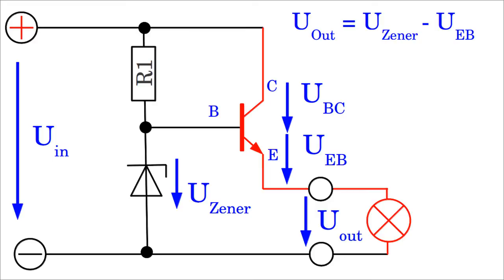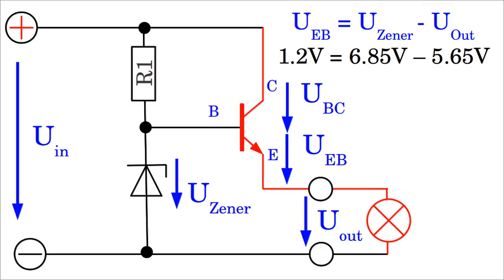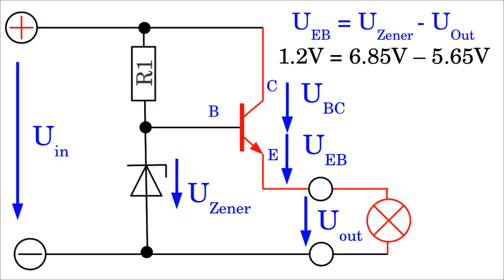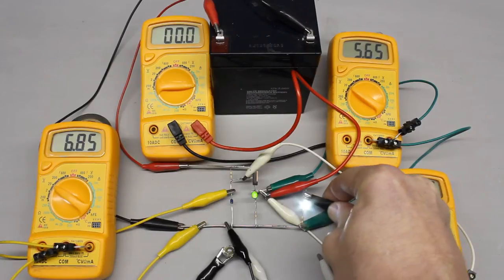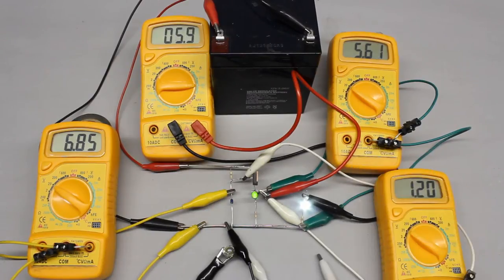The output voltage is also independent from the resistance of the load. Whenever the resistance of the load is decreasing, the output voltage across the load is decreasing too, resulting in an increasing voltage between emitter and base. However, with increasing emitter-base voltage, the resistance of the transistor's emitter-collector line is decreasing, resulting in an increasing output voltage. The feedback loop of the circuit counterbalances the falling voltage caused by a decreasing resistance of the load.